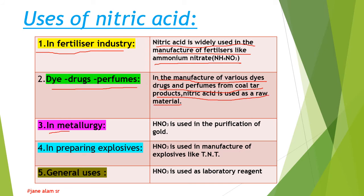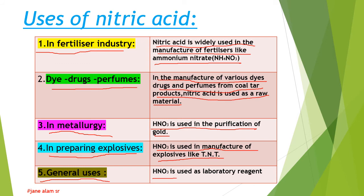Number 3: In metallurgy. HNO₃ is used in the purification of gold. Number 4: In preparing explosives. HNO₃ is used in the manufacture of explosives like TNT. Number 5: General usage — HNO₃ is used as a laboratory reagent.